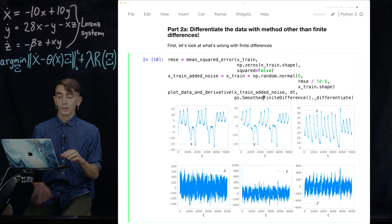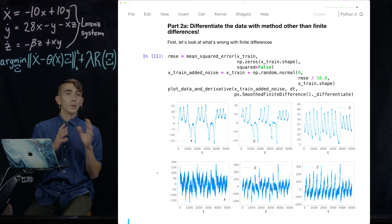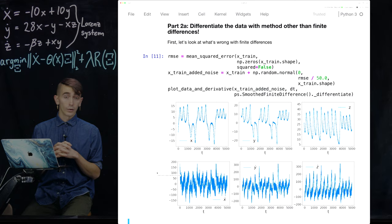So if we just do the same thing, but we use these smooth finite differences, you can see that the x dot, y dot, and z dot here are much easier to see and sort of clearly are following the data, even though there is still some substantial noise on top of them. But this is sort of an easy trick that if you have some minor noise, you can really improve your sparse regression algorithm by just using a better differentiator. So that's 2a, pretty easy.